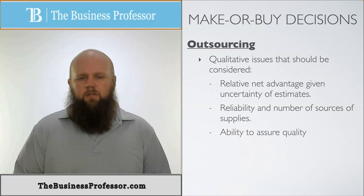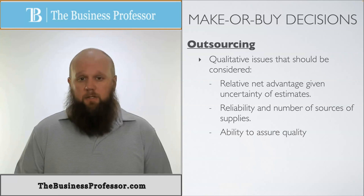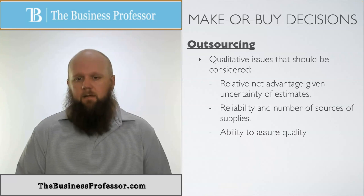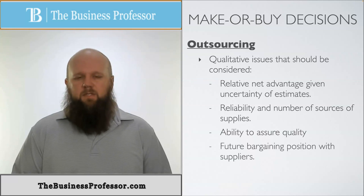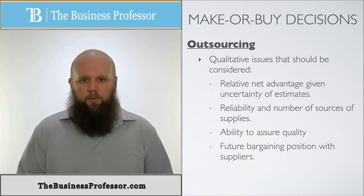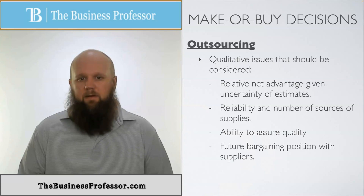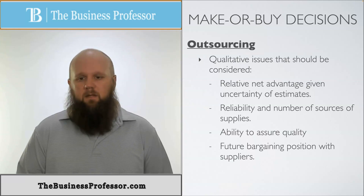Third is the ability to assure quality. If you're doing it yourself, you can make sure quality control is implemented. If somebody else is doing it, you don't have complete control. Finally, consider the future bargaining position of suppliers. If you fully rely on a supplier to produce a component, they gain leverage to negotiate higher prices in the future, so be careful of that.